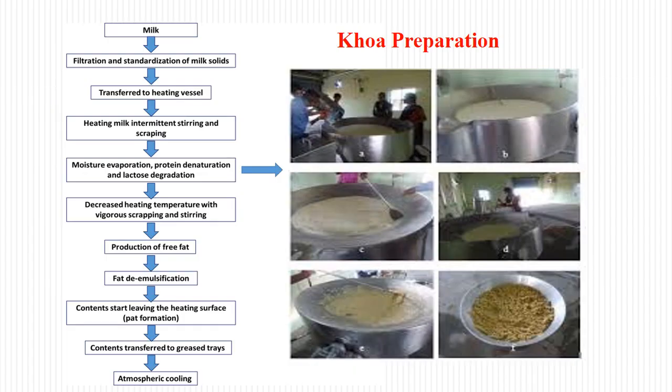Here we will discuss the flow of operation for Khoa preparation. Milk is taken and filtered, then standardized, transferred to a heating vessel, and intermittent heating and stirring begins. After sufficient evaporation of moisture there will be protein denaturation and lactose degradation. At this stage there can be some browning reaction which gives special flavor. Heating temperature should then be reduced and scrapping or stirring done faster, as the mass will stick heavily and may cause burning or charring. After that there is production of free fat and fat demulsification — the fat emulsion breaks and the mass becomes more solid, starting to leave the surface.